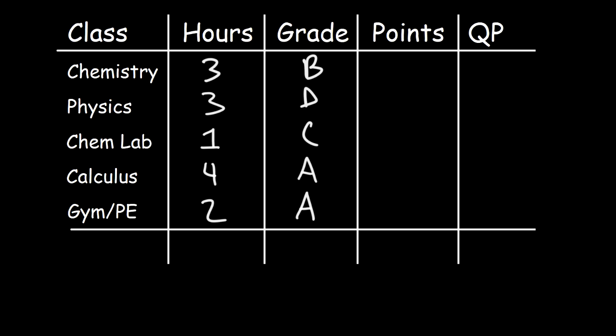The next thing you need to determine is the point system for each letter grade. In most schools, an A is worth four points, a B is worth three points, a C is worth two points, a D is worth one point, and an F is not worth anything.